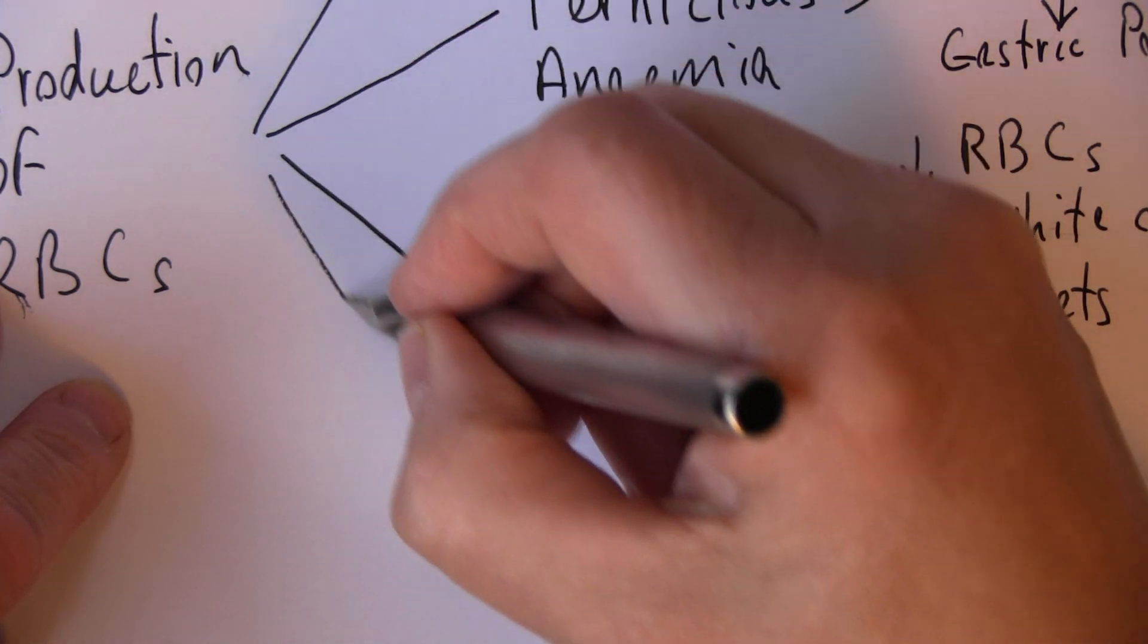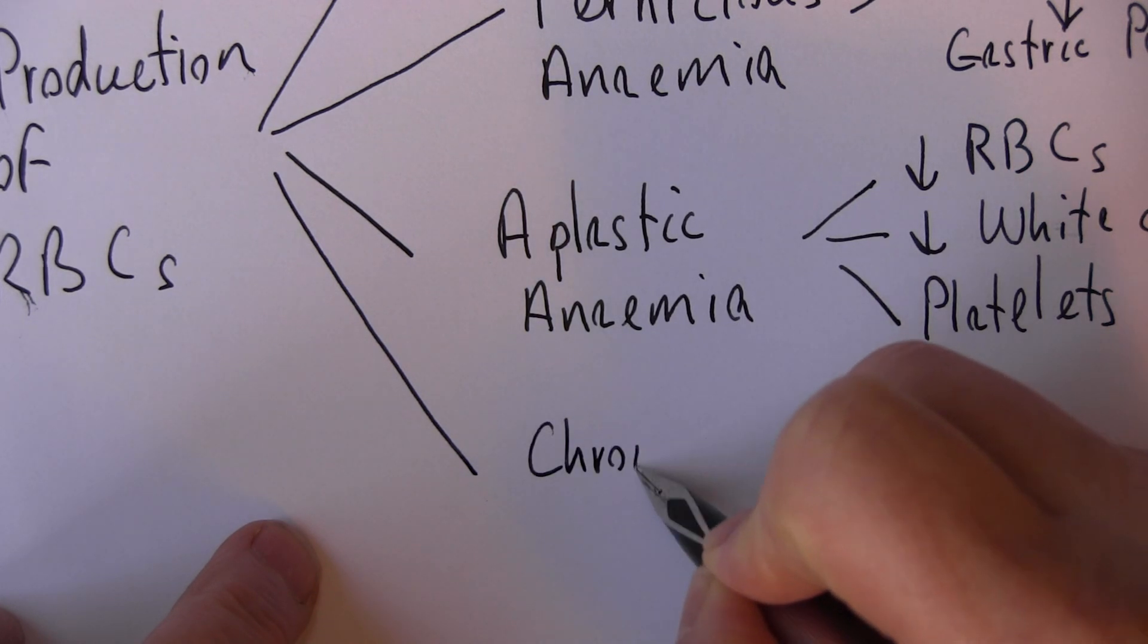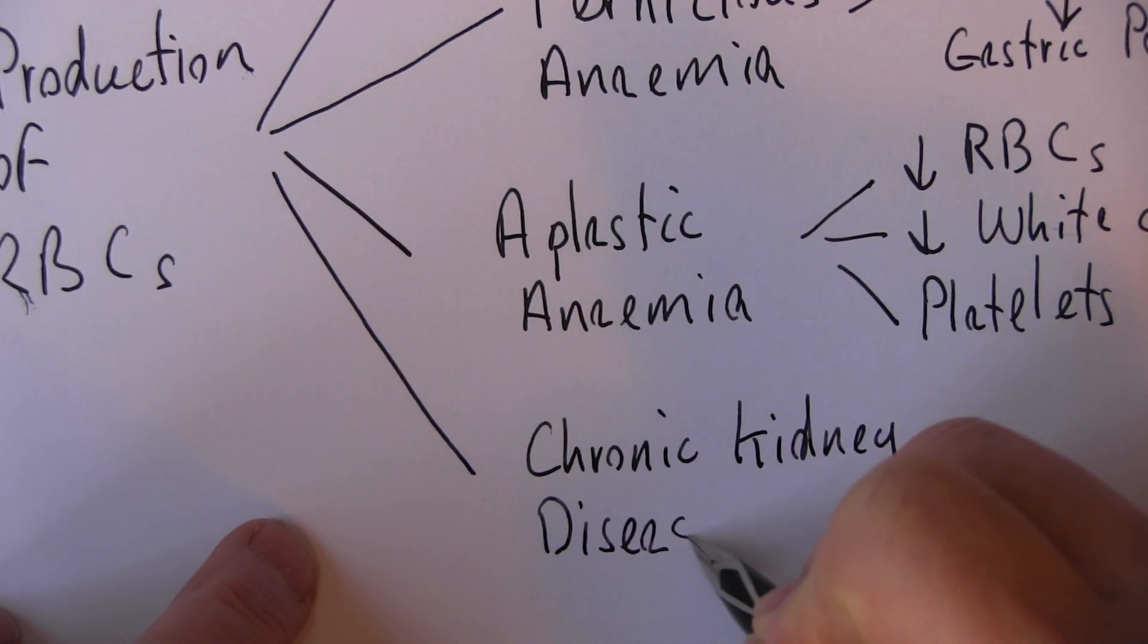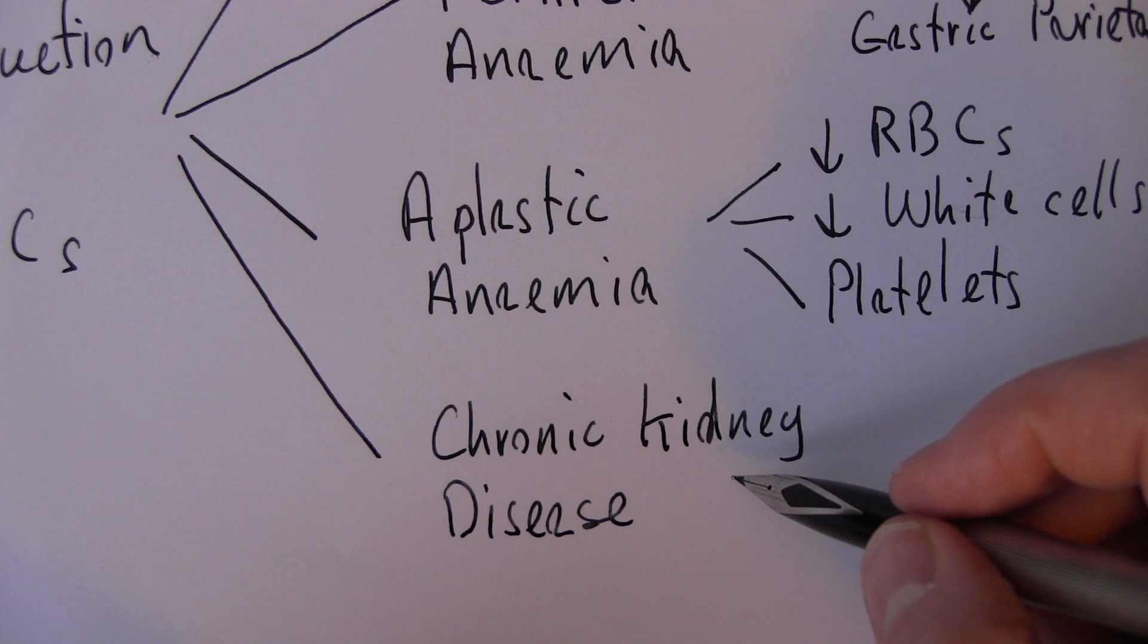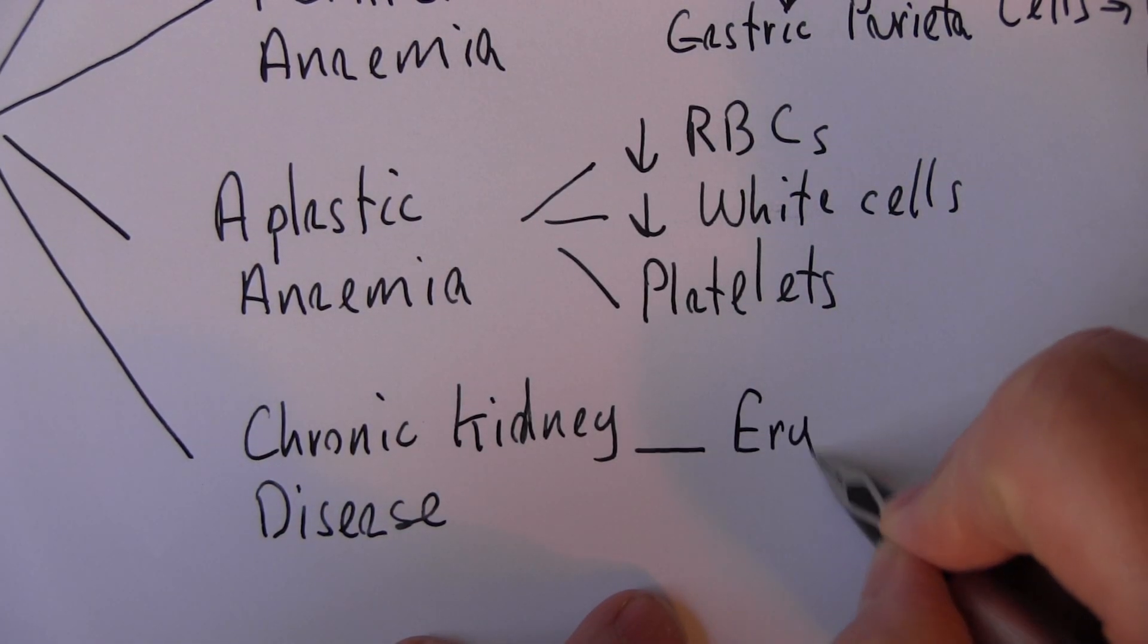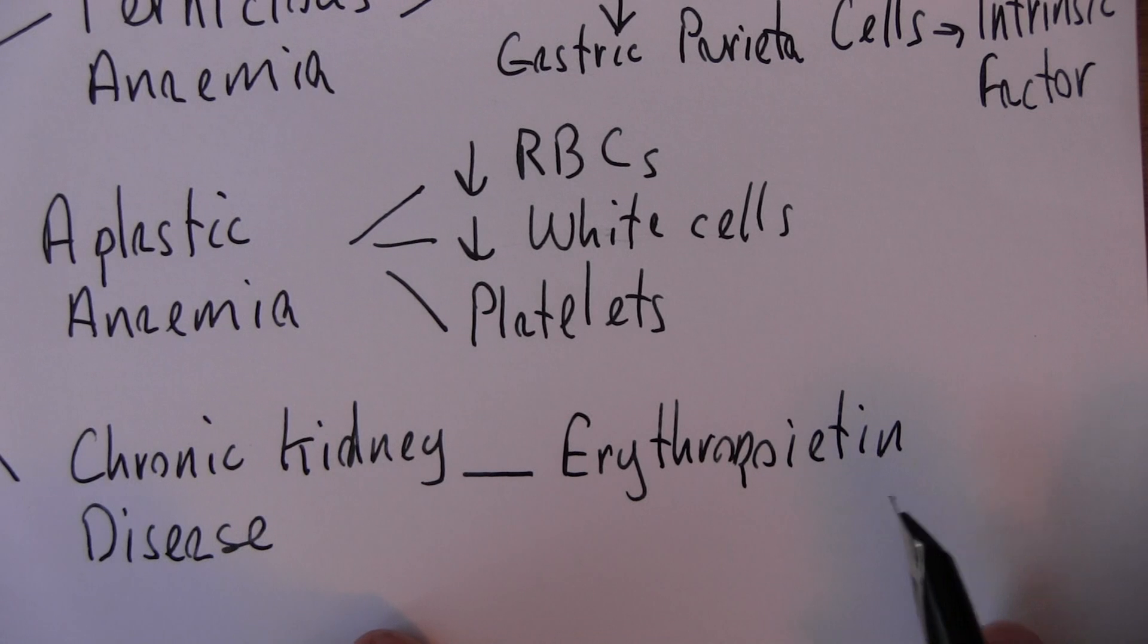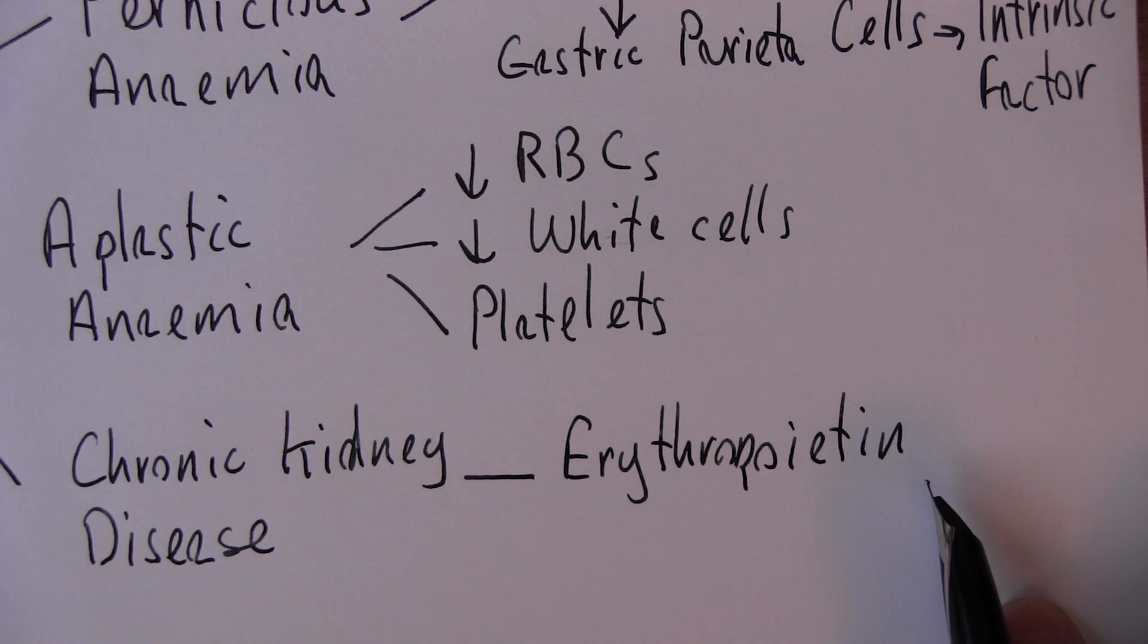Another classic one for the production of red blood cells is chronic kidney disease, CKD. You probably remember that the erythropoietin is produced by the kidneys. So when the kidneys are diseased, we're going to get reduced production of erythropoietin. Erythropoietin is the hormone that goes to the bone marrow to stimulate the process of erythropoiesis, which is production of the red blood cells.